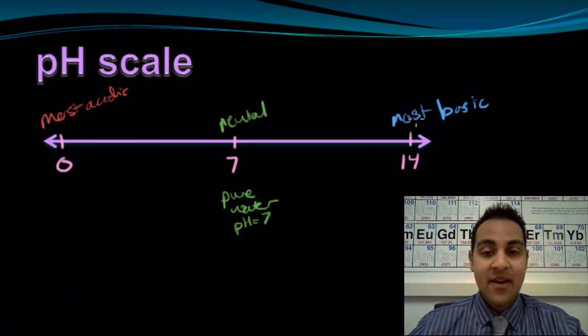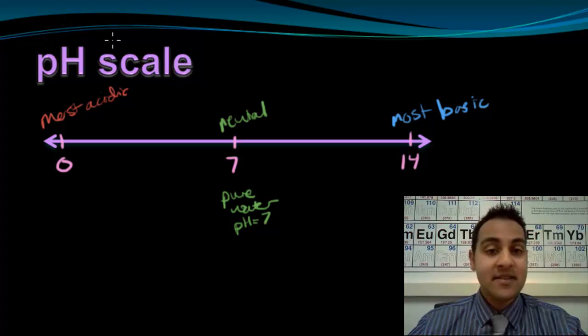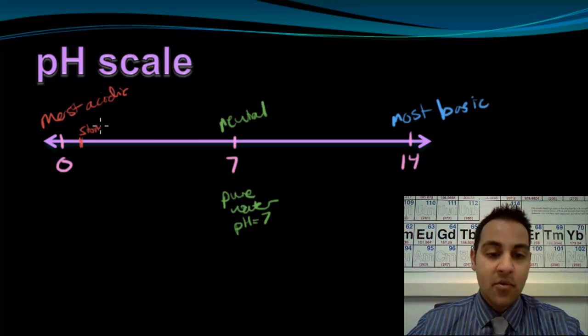And acids and bases can be found everywhere. You have acids and bases in your own body. For example, your stomach acid has a pH of 1, or around 1.